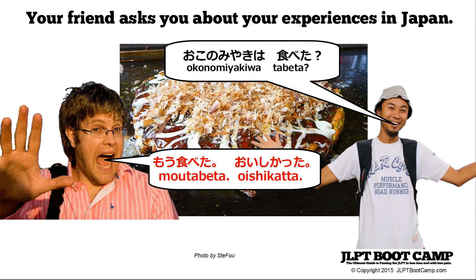This is Mac from JLPTBootCamp.com with another N5 grammar lesson. Today we're going to talk about Mo and Mada. Mo and Mada are used to talk about the change of state, or a state that remains the same. Although these are kind of easy to learn, they're easy to get confused — at least for me it was easy to get these two confused when I first started studying Japanese.